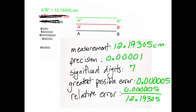And our final example, measurement is 12.19305 centimeters. Our precision is 1 ten-thousandths. Nope, that's not right. Ten-hundredth, thousandths, ten-thousandths, hundred-thousandths, 1 one-hundred-thousandths. Significant digits would be 7.